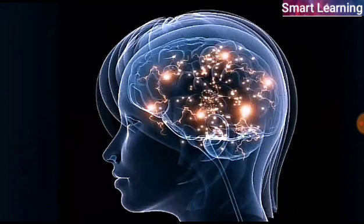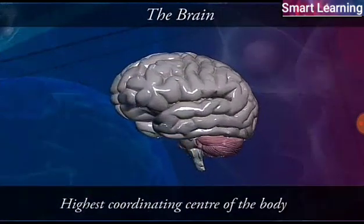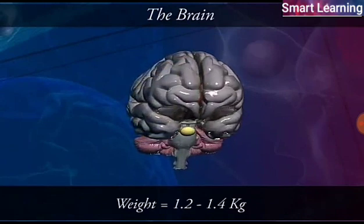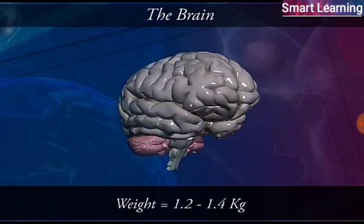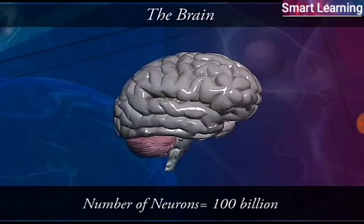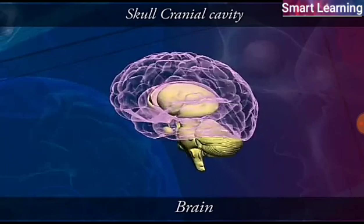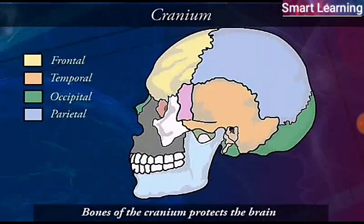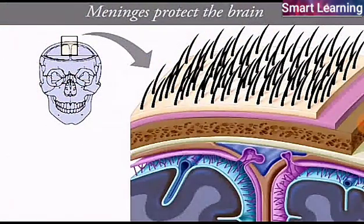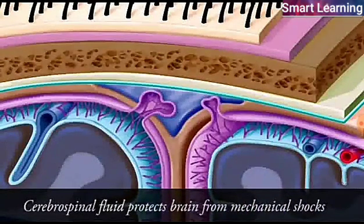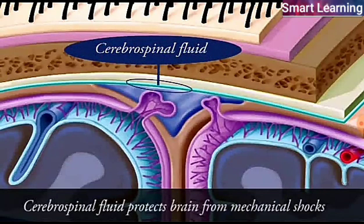The brain is the broadest and uppermost part of the central nervous system and is the highest coordinating center of the body. It is a soft whitish organ that weighs 1.2 to 1.4 kg and forms about 98% of the weight of the whole central nervous system. It has about 100 billion neurons. The brain is situated in the cranial cavity of the skull, present in the head region of the body. The bones of the cranium or the brain box protect this delicate organ from mechanical injury. The brain is surrounded by three membranes called meninges, which provide protection to it. The space between these meninges is filled with cerebrospinal fluid, which protects the brain from mechanical shocks.